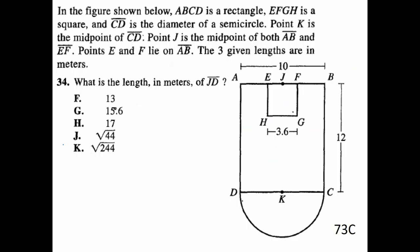I'll look at here. Figure shown below. It says ABCD is a rectangle. EFGH is a square. CD is the diameter of a semicircle. We can see all of those figures and information are labeled here. It says point J is the midpoint of both AB and EF. We see point J is here. So that's going to be significant in a minute. We're told we've got lengths and meters. And we want the length and meters of JD. First thing I'd like to point out is I can see that J is a point. I can see that D is a point. And I don't even see line segment JD anywhere on this.